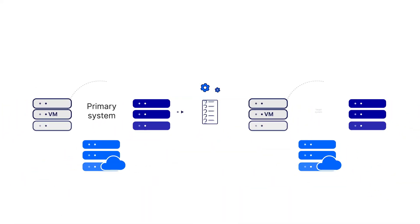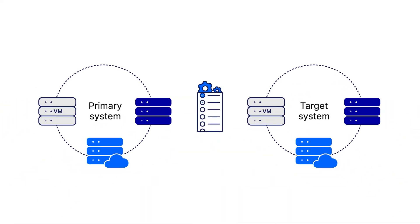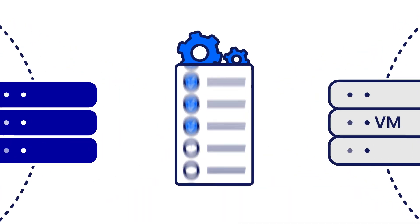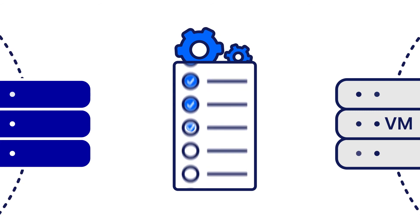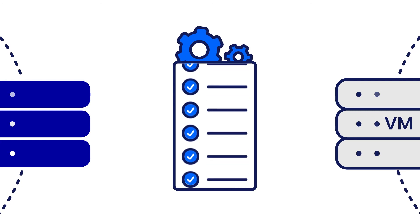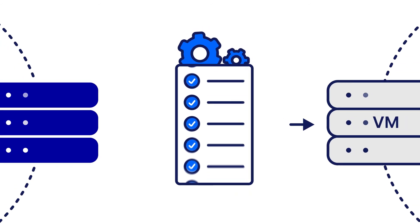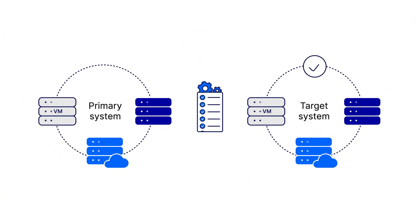During the validation stage, Migrate automatically assesses up to 100 values to confirm the target can support the source, and then your migration can begin.